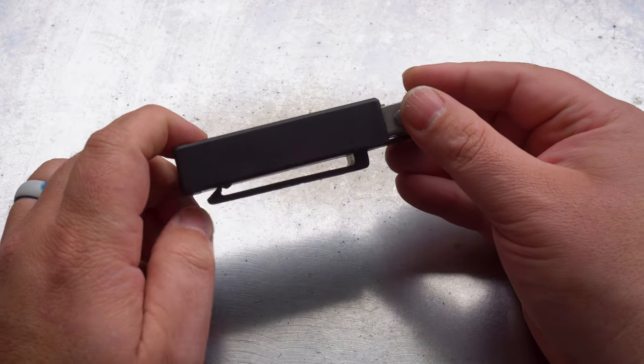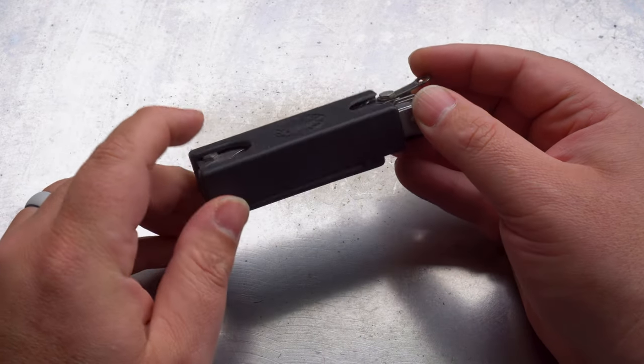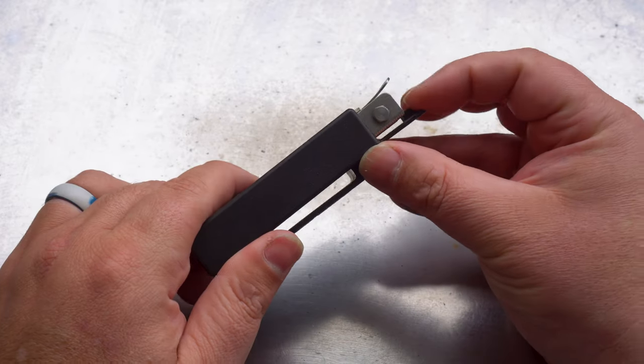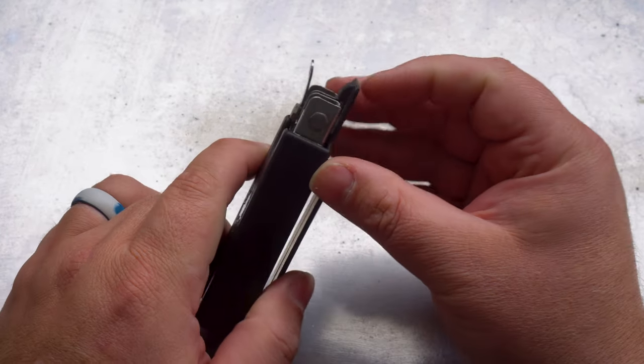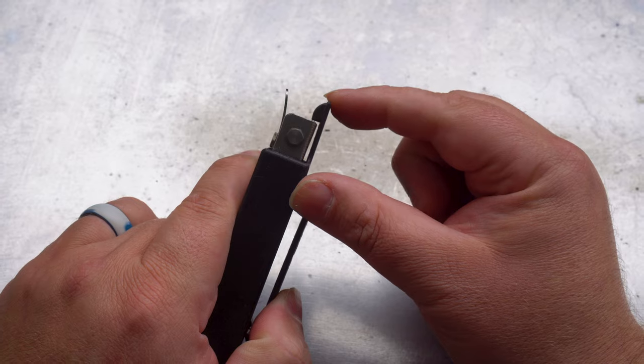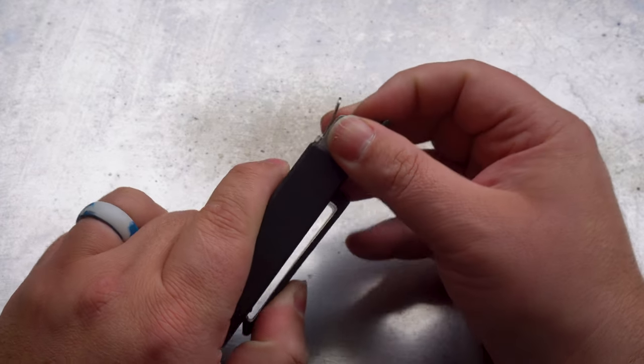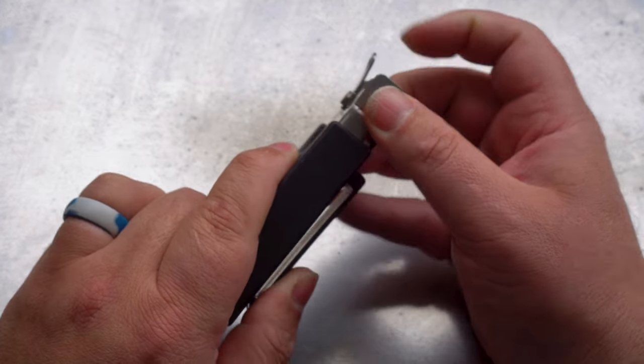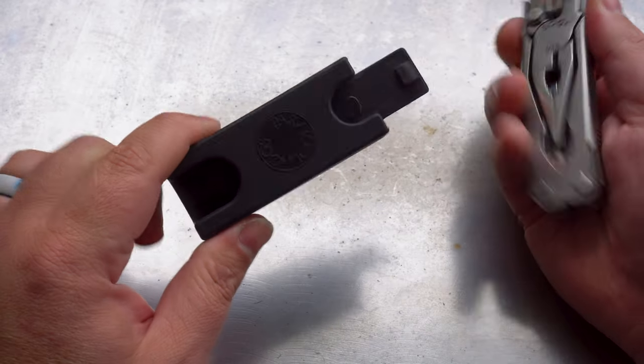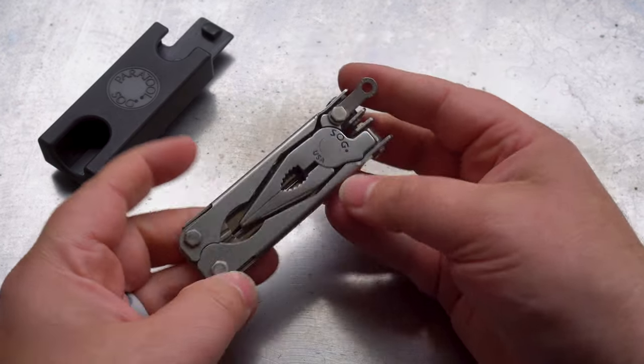The sheath is made from a single piece but it does do a good job of staying on a belt. To remove the tool all you need to do is take this little tab up the top here that's holding it in place, just pull it back and the tool slides out. It would be a lot easier for me to do it here in my hands than if it was on my belt though.